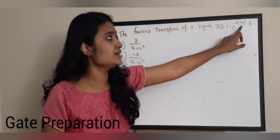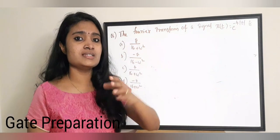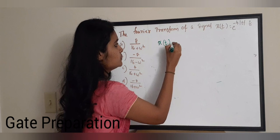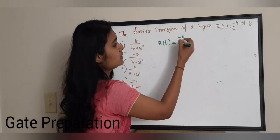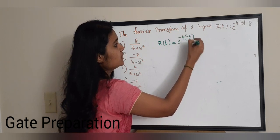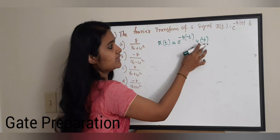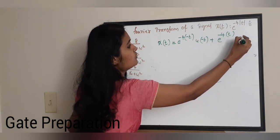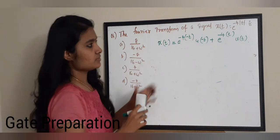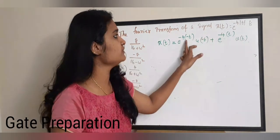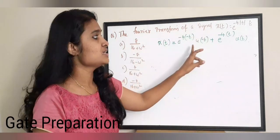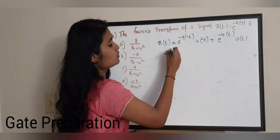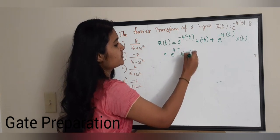Since it is |t|, the signal has both negative and positive sides. We can represent x(t) as: x(t) = e^(−4·(−t))·u(−t) + e^(−4t)·u(t), which simplifies to e^(4t)·u(−t) + e^(−4t)·u(t). Here u(t) is the unit step function — u(−t) captures the negative side and u(t) captures the positive side.